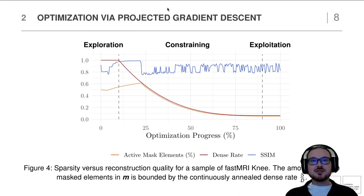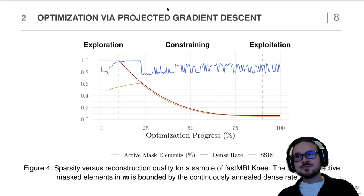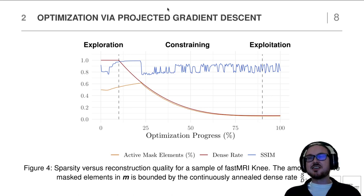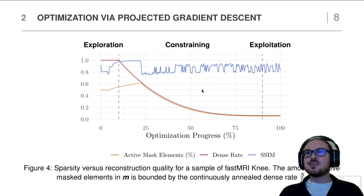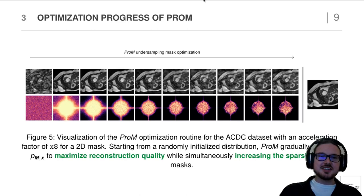As a last step, we need to enforce the constraint we introduced. For this we utilize projected gradient descent, which projects the Bernoulli parameters into a space that fulfills the constraint. We adopt the method PROP-MASK from Scho et al. — the method is rather non-trivial, so we recommend checking our paper for details. In practice, this projected gradient descent reduces the number of active mask elements to a very sparse solution while the SSIM of the reconstructed image stays rather consistent.